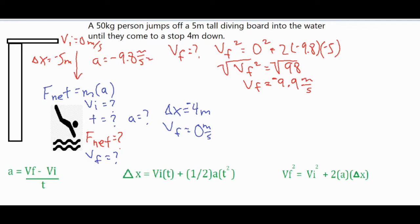So that is going to translate to our VI for the second part of the problem. So where this one ends moving through the air is where this one starts moving through the water. So we have a VI of negative 9.9 meters per second.